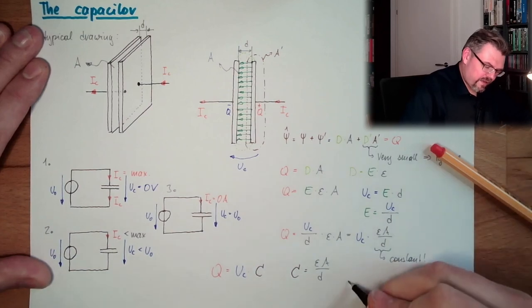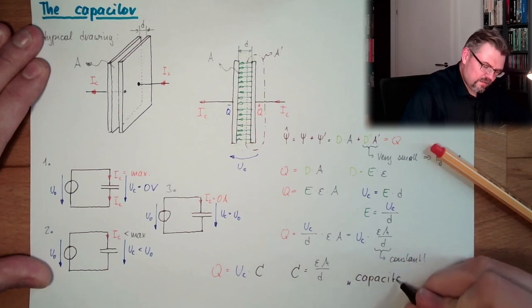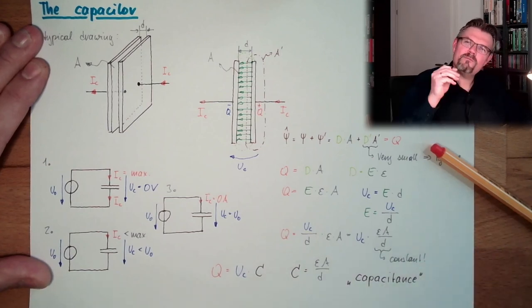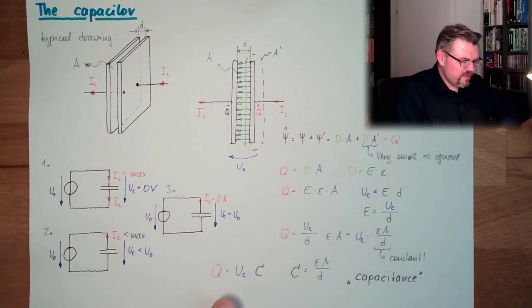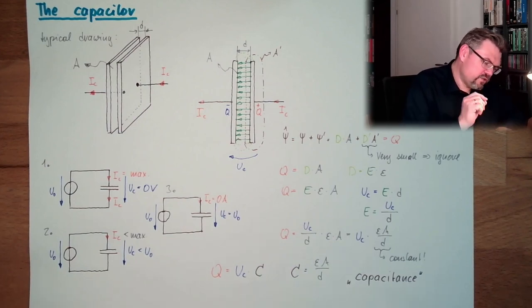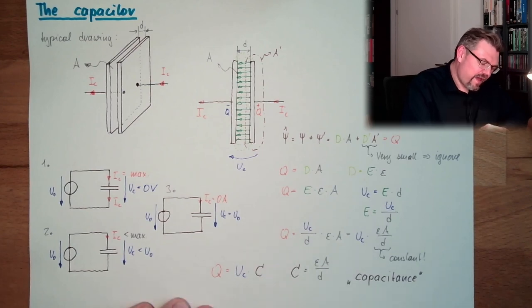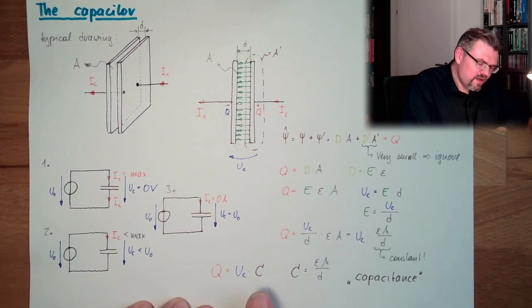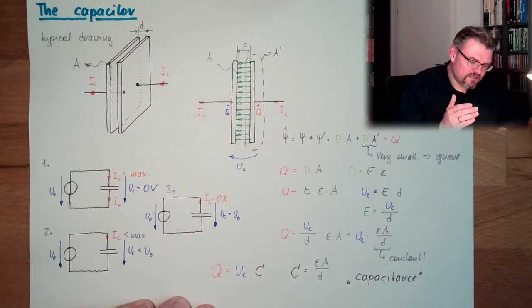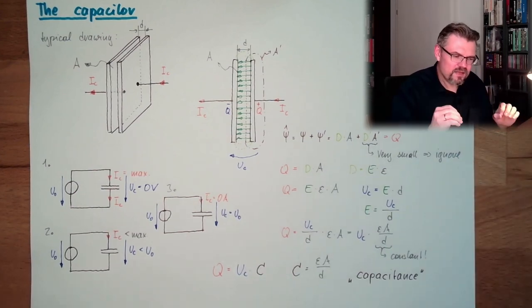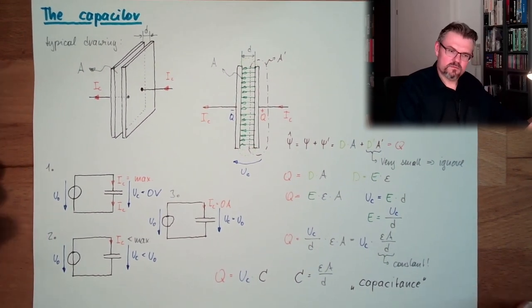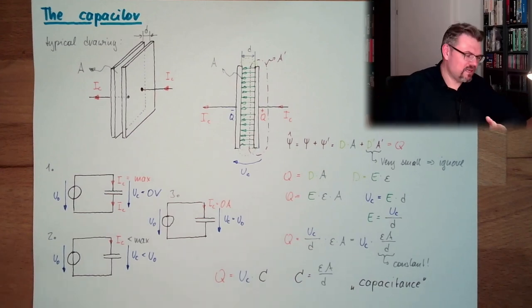And this is called Capacitance. This is the capacitance of the capacitor. You see there is a relationship between the charge stored in the capacitor and the voltage — the voltage of the capacitor — and this is the capacitance. This means the bigger the capacitance is, the less voltage I have for the same charge. This capacitance indicates how much charge I can put in to reach a certain voltage. Capacitance — this is a good name, actually.